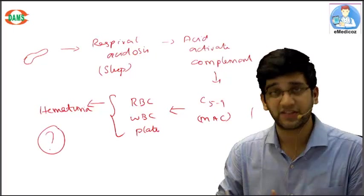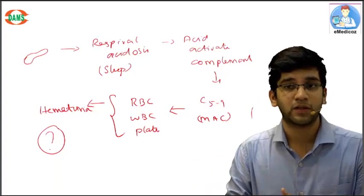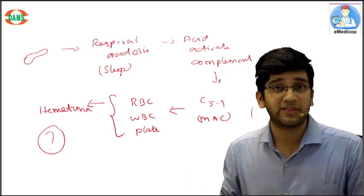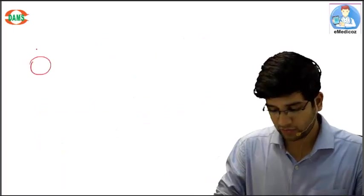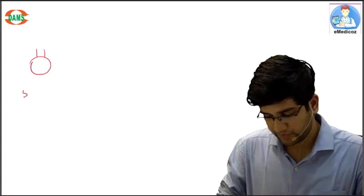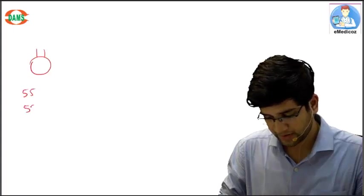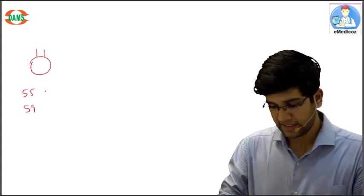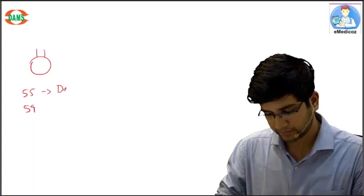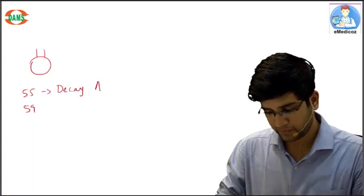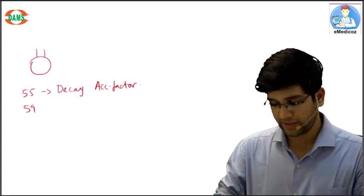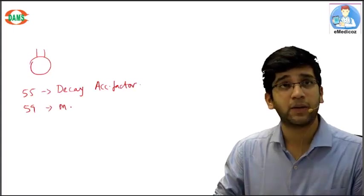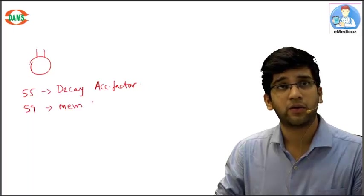If this is the reality, each of us should pee blood in the morning - that doesn't happen. So what actually protects us from this complement-mediated hemolysis? All RBCs normally have two molecules: CD55 and CD59.